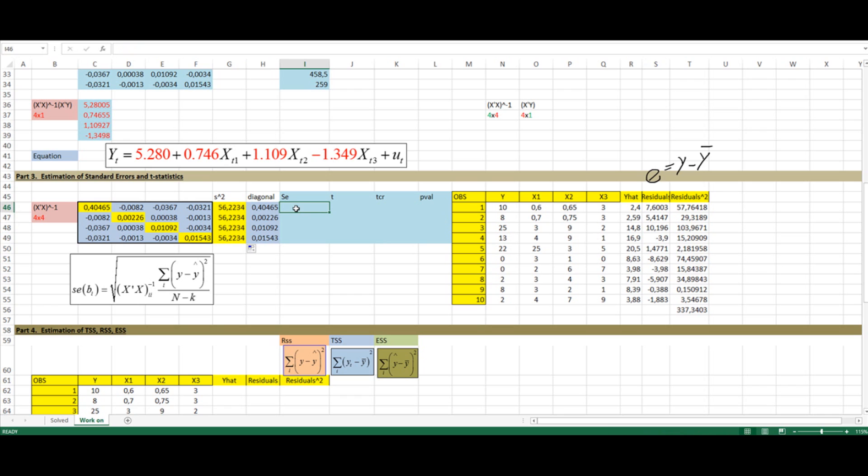And now I am ready to estimate the expression that we see over here. So for the first beta, I have the square root of element 1,1, 0.4 in the x transpose x to the minus one matrix times s squared. So there is my standard error for all four coefficients. I have estimated my standard error.